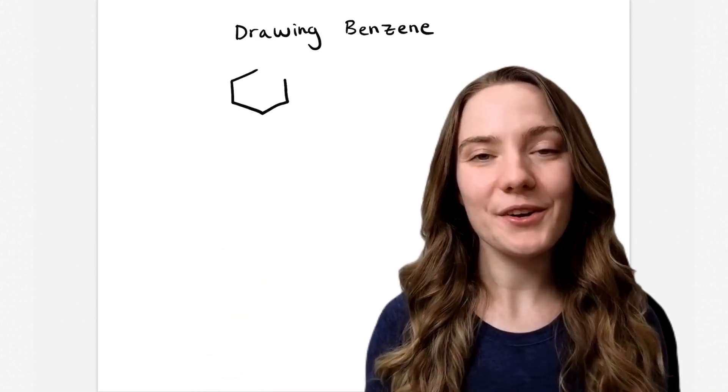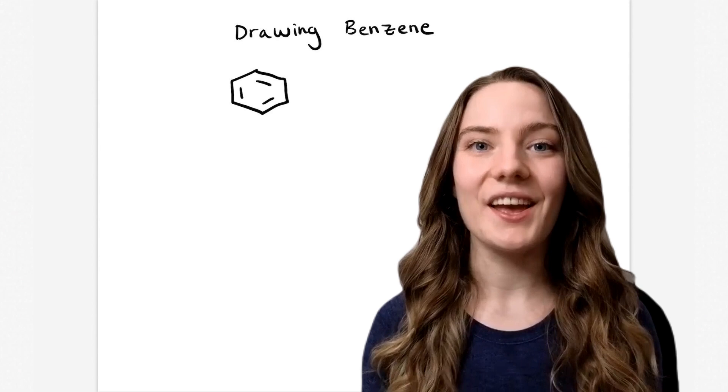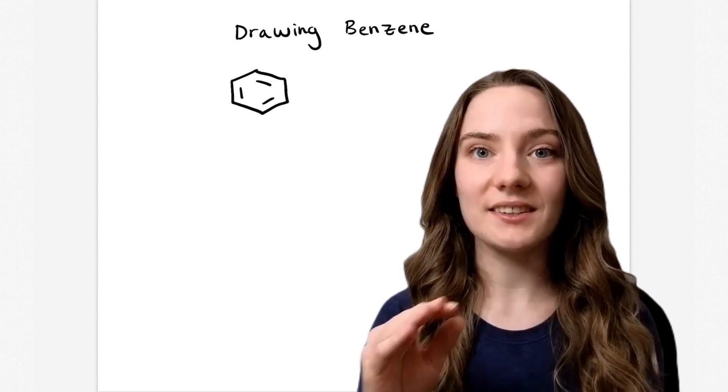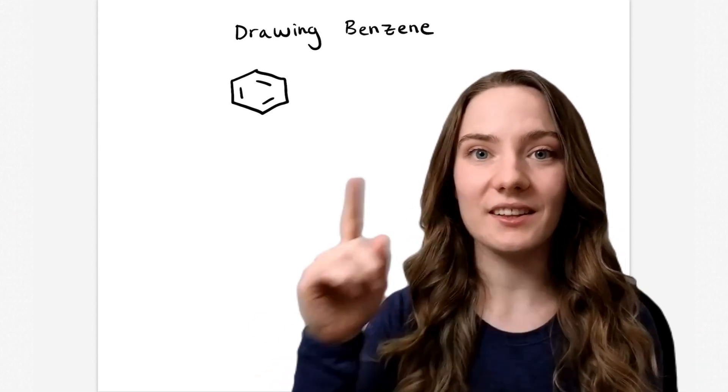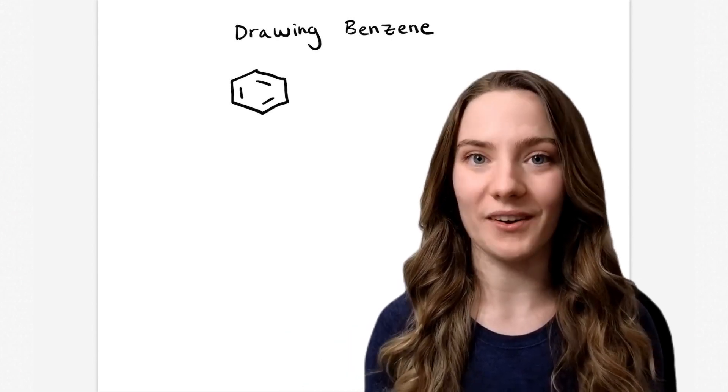Hi everyone, today I want to talk about why I prefer to draw benzene like this. You can see I draw it with six carbon atoms arranged in a cyclic structure and three alternating double bonds.